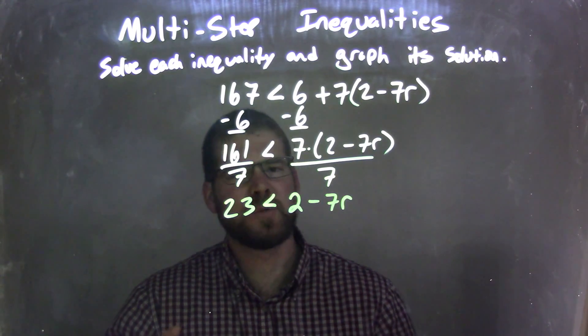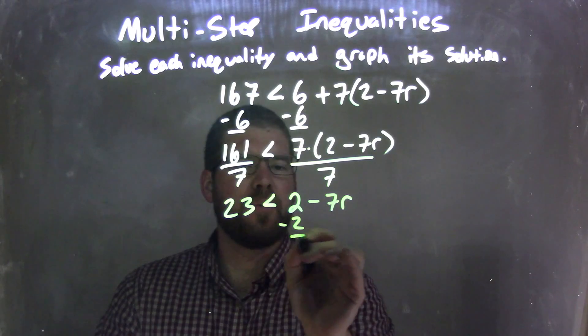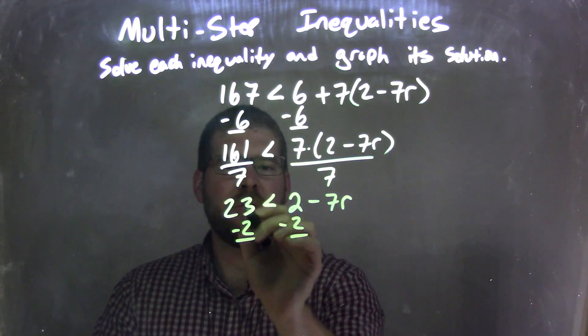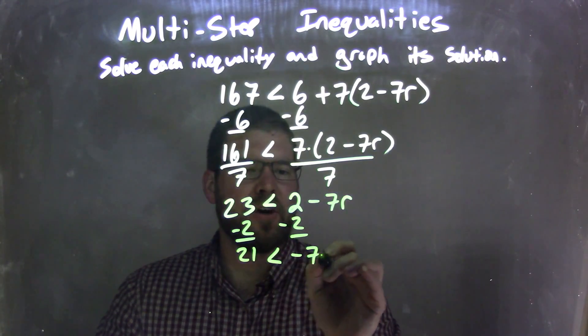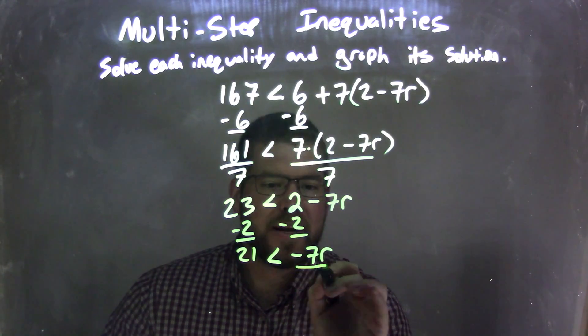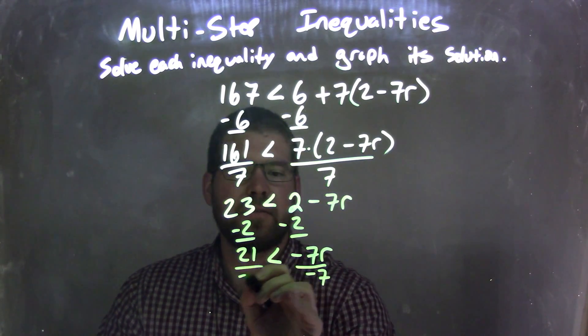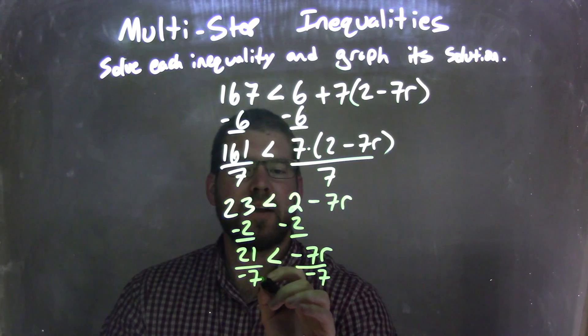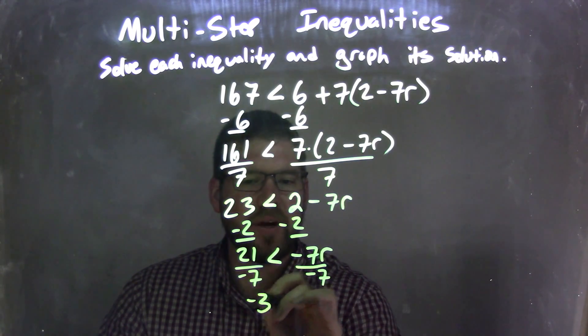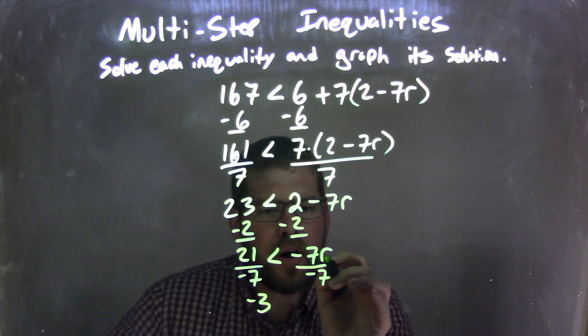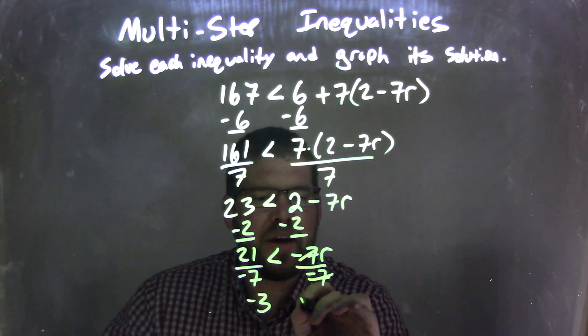Now it becomes a more manageable problem. I'm going to subtract 2 from both sides, leaving me 23 minus 2 is 21, which is less than negative 7r. Now I can divide by negative 7 on both sides, leaving me 21 divided by negative 7 is negative 3, and then the r here is just on the right.